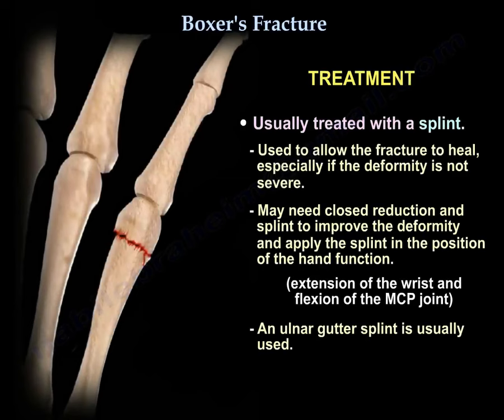You may need closed reduction and splinting to improve the deformity. Apply the splint in the position of hand function, which is extension of the wrist and flexion of the MCP joint. Usually an ulnar gutter splint is used.